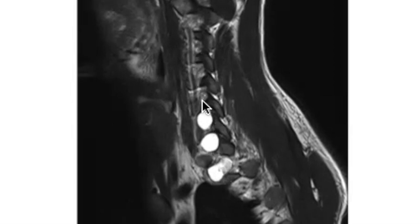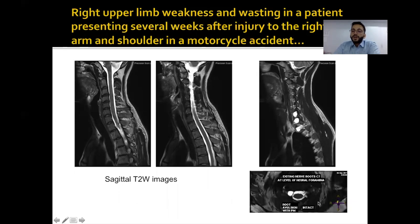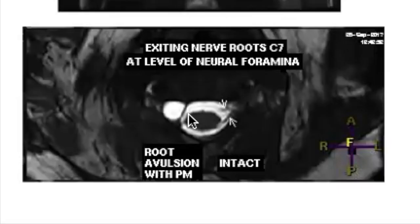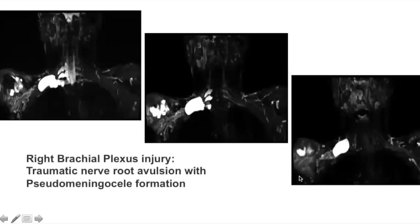The exiting nerves appear intact, but in the foramina there are cystic areas which could be traumatic pseudomeningoceles. On the axial 3D SPACE sequence, the ventral and dorsal rootlets are not seen on the right side at C7-D1, whereas they are seen on the left side — indicating complete nerve root avulsion of the right-sided C7 root with formation of a traumatic pseudomeningocele. The 3D STIR sequences with reformations clearly show the traumatic pseudomeningoceles at C6-7, C7-D1, and D1-2 levels, involving the roots.